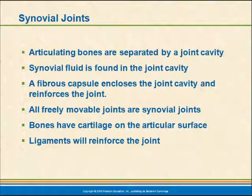Synovial joints are joints separated by a joint cavity. We have two bones with a joint cavity surrounding their ends, and located in that cavity is synovial fluid, a liquid that acts as a lubricant. The capsule encloses the cavity and reinforces the joint so the two bones don't separate easily. They are freely movable within a range. The bones all have cartilage on their surfaces, and ligaments reinforce the joint spreading from one bone to the next.